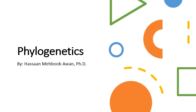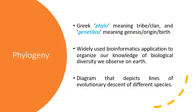Today we will discuss phylogenetic trees. Phylogenetics is a combination of two Greek words: 'phylo' and 'geneticos.' Phylo means tribe or clan, and geneticos means genesis, origin, or birth. Using phylogenetic trees, we study the birth or origin of different species living on this planet. It is perhaps the most widely used bioinformatics application, and we use it to organize our knowledge of biological diversity observed on Earth.